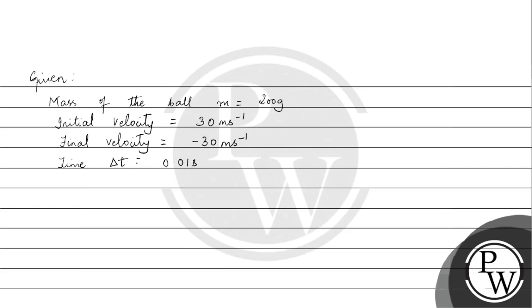We will write the impulse as final momentum minus initial momentum. So this is m into final velocity minus m into initial velocity. Let us denote this as initial velocity and this as final velocity.